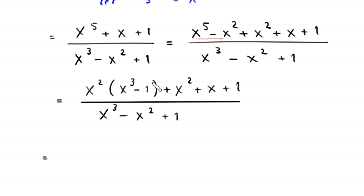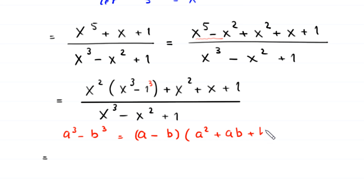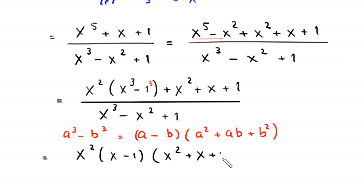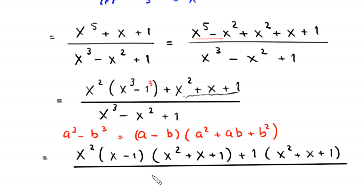Now this 1 is the same as 1 cubed. So by using the algebraic identity a cubed minus b cubed equals a minus b times a squared plus ab plus b squared, the expression in the numerator becomes x squared times x minus 1 times x squared plus x plus 1, plus 1 times x squared plus x plus 1, divided by the denominator x cubed minus x squared plus 1.